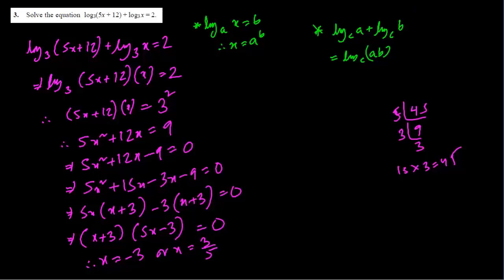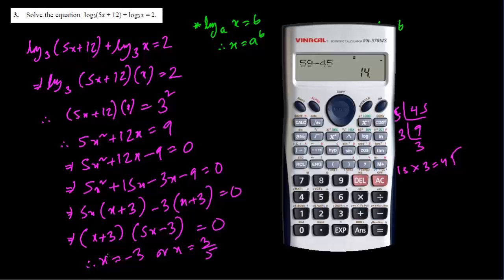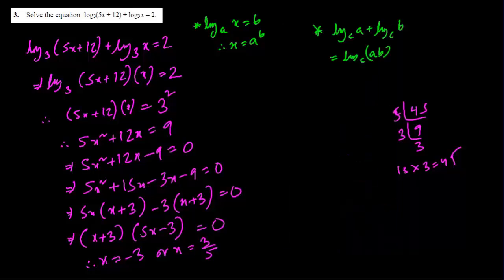Now it's very important to check because logarithm has restrictions. Although we have two values of x, log cannot work if the argument is 0 or negative — that is a mathematical error. If we plug in x = −3, log of a negative number is not possible. So that value cannot be used — it's an extraneous root. Therefore x = 3/5.